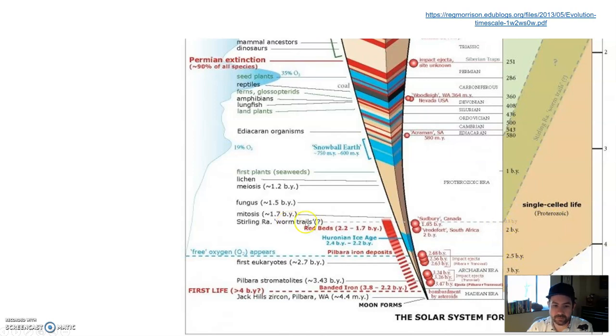This is where we're starting to get multicellular life up and through this area. Here's snowball earth, the thing that may have created the giant great unconformity, the giant unconformity that spans all of earth. So that's where that fits in.